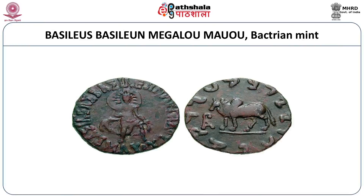Another interesting type is the Zeus-Nike type, where you have standing Zeus on the obverse and on the reverse you have Nike holding a wreath in her hand with a particular monogram. A third important type of coins for Mawas is Radiate Artemis. This is a very interesting type because you would not find it in the coins of many rulers. Here we have Artemis who is radiate and the chiton is blowing in the wind. On the reverse you have the Humped Bull, which is a significant signifier of the Pushkalavati region in the Peshawar district. So this coin can be identified as a coin from Pushkalavati.